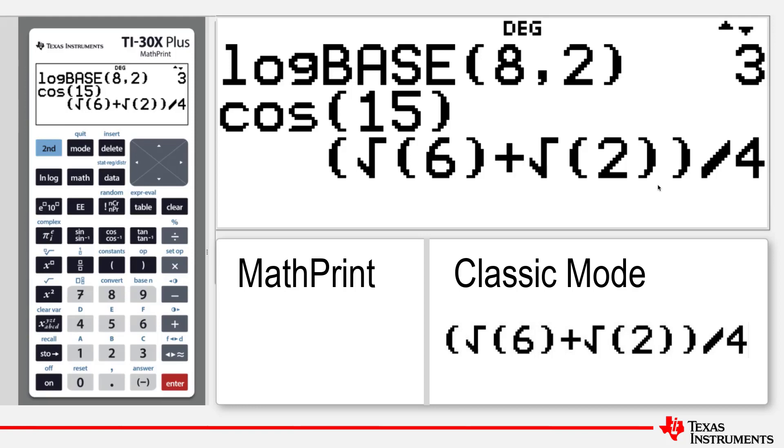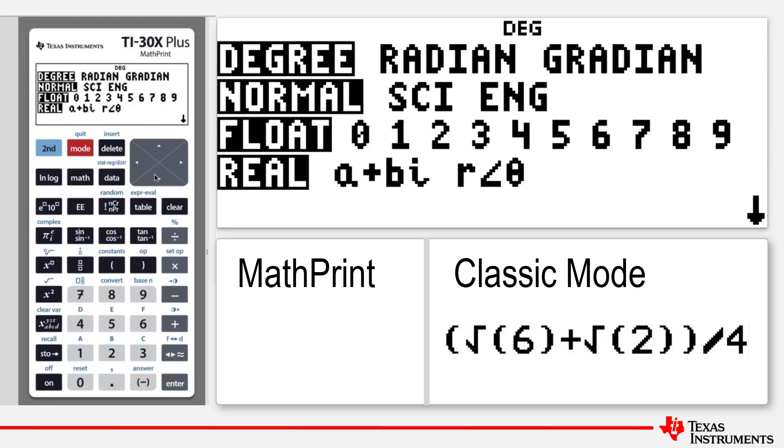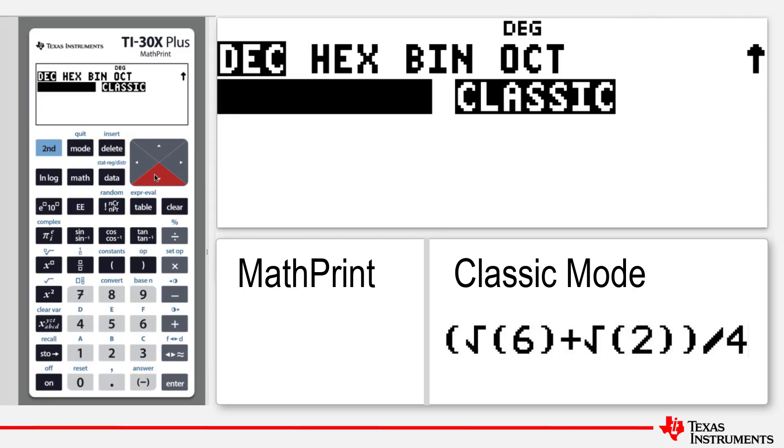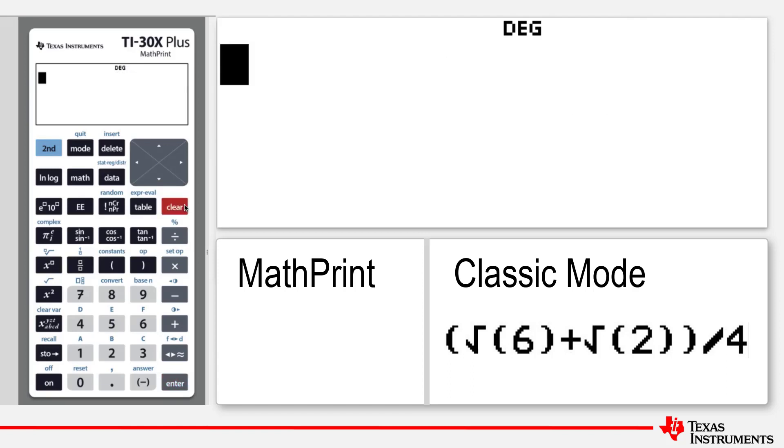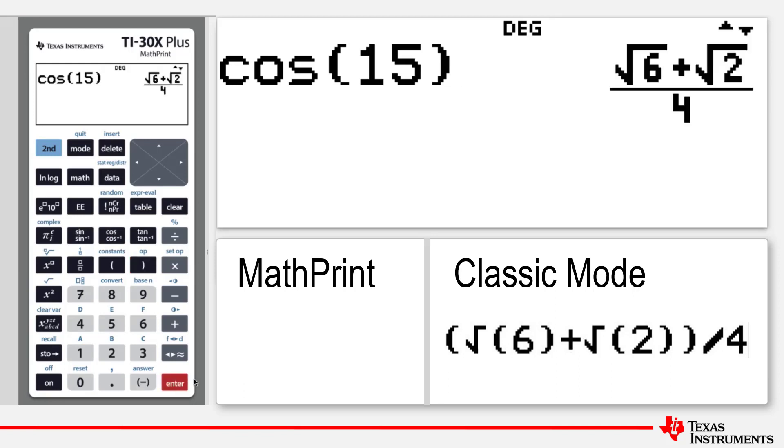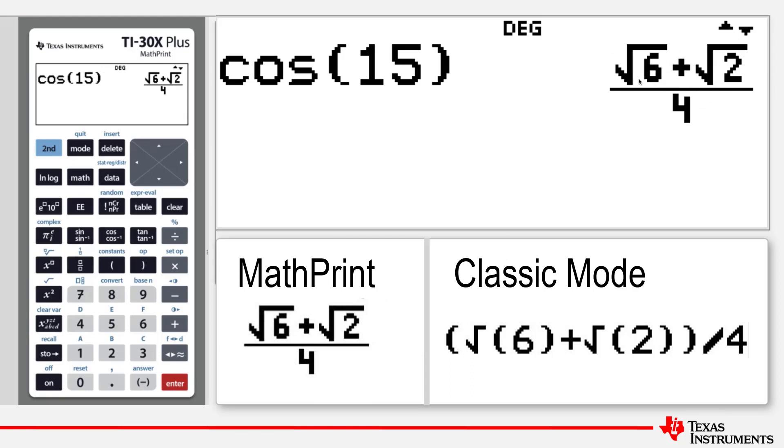Now let's compare the output when the calculator is in MathPrint mode. As we see, this answer we saw before is now much easier to read.